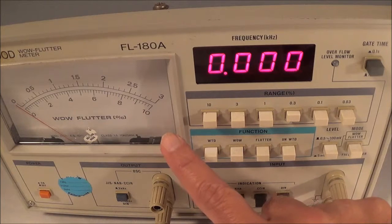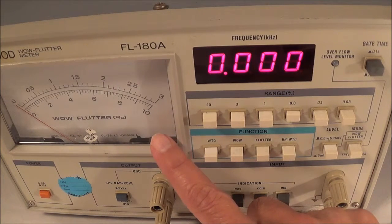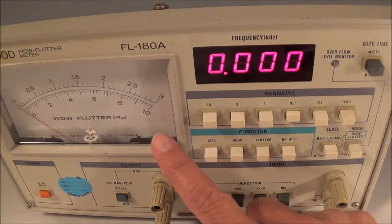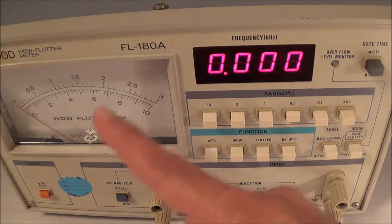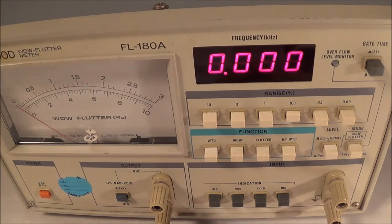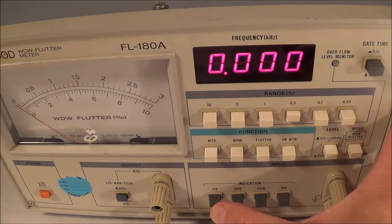Looking at the analog meter, wow and flutter deviation or error is indicated as a percentage on the analog meter.